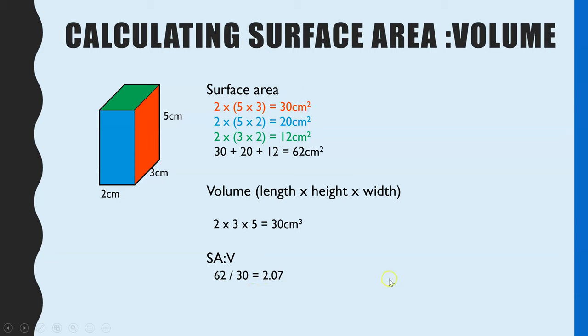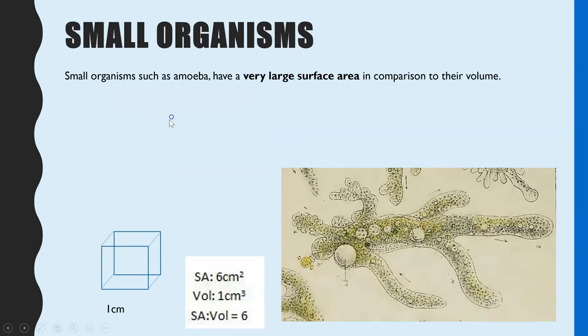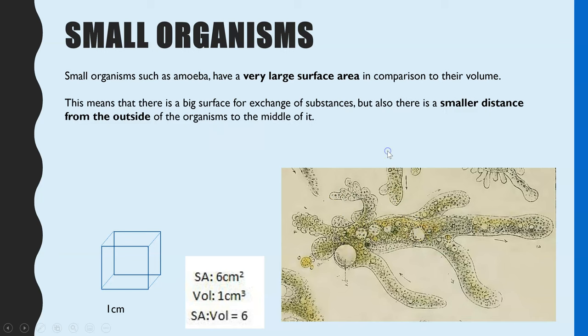And this is what they're referring to. The biology element, just to recap, smaller organisms, so for example, an amoeba, naturally have a very large surface area compared to their tiny volume. So that means they already have a big enough surface to exchange substances without any additional adaptations.